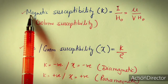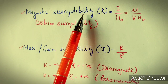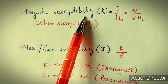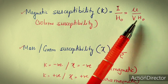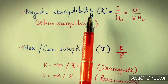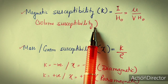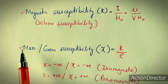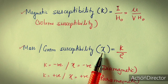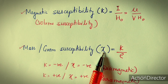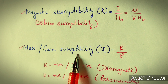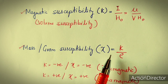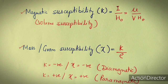Magnetic susceptibility is a very important measure for the magnetic properties of transition metal complexes, written as mu upon V·H₀. If we divide this volume susceptibility by the density of the substance, it becomes mass or gram susceptibility, denoted by chi.